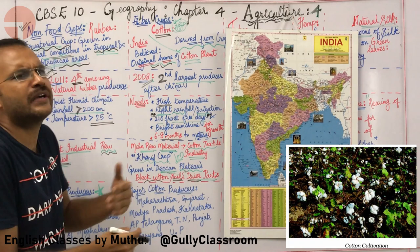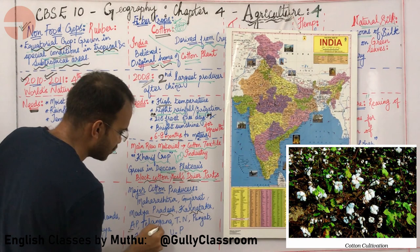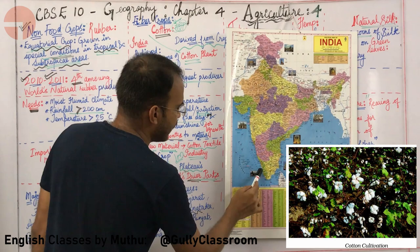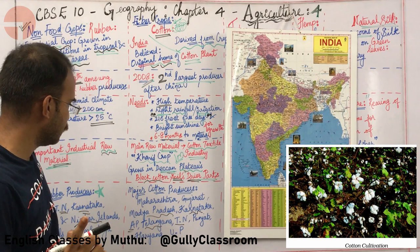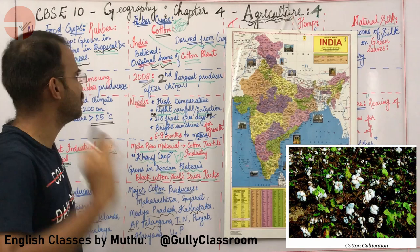Gujarat, Maharashtra, Madhya Pradesh, Karnataka, Andhra Pradesh, Telangana, and Tamil Nadu are cotton-growing states. Note: Kerala is not especially known for cotton cultivation.